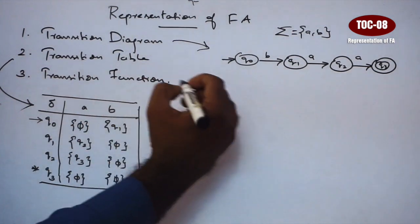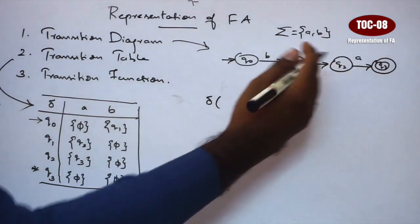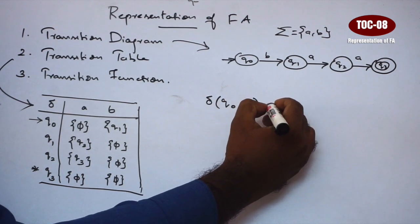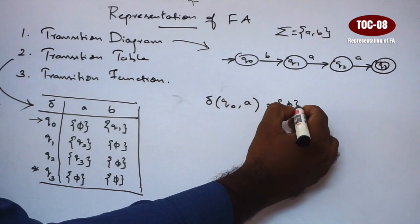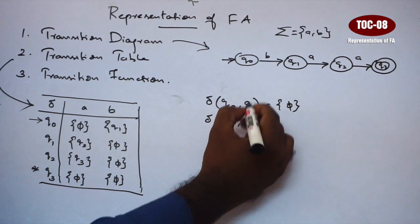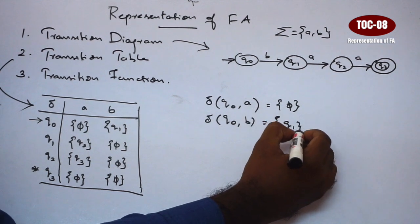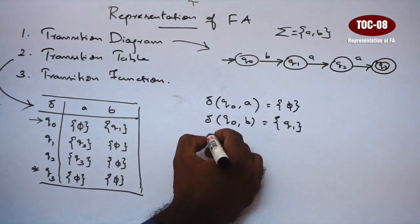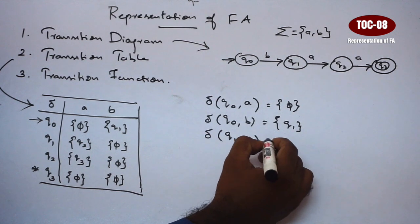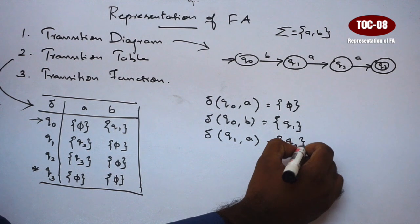So transition function representation — this is the function. Transition of Q0 on A is null. Transition of Q0 on B goes to Q1. Transition of Q1 on A equals Q2.